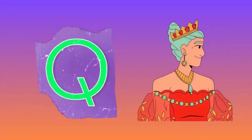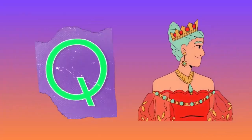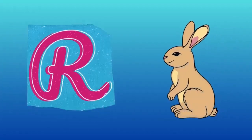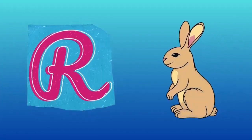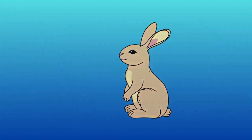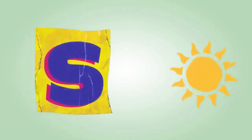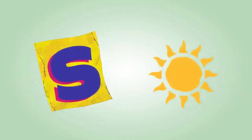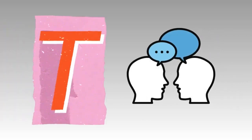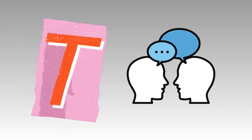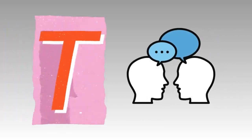Q is for queen, qu-qu-queen. R is for rabbit, r-r-rabbit. S is for sun, s-s-sun. T is for toad, t-t-toad.